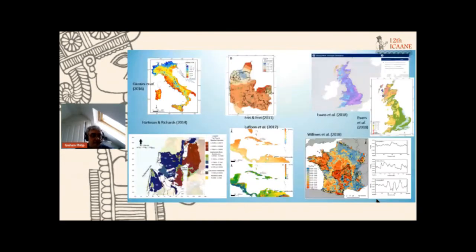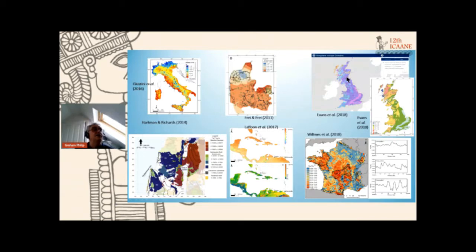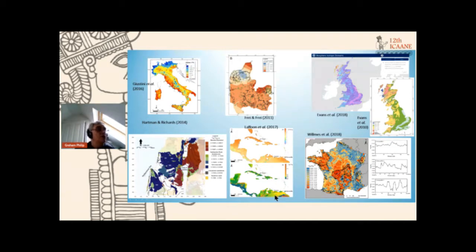Before we can really interpret human or animal isotopic data, we need to gain a basic understanding of the distribution of the key isotopes in the natural environment. Over the last decade, the mapping of stable isotopes in the natural environment has become a very useful tool for archaeologists, particularly for studying mobility and migration. This slide shows a selection of maps: a delta oxygen-18 map for the Italian peninsula, strontium isotope maps for Britain, and maps for the Caribbean showing limited oxygen isotope differentiation across northern South America.